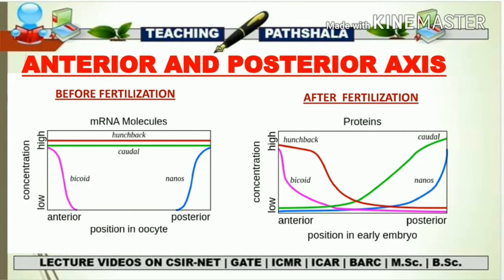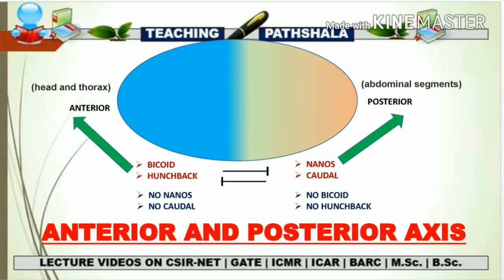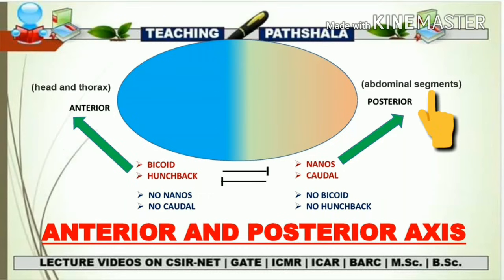Now let's consider this circle as a Drosophila embryo. You can see the anterior and posterior portions. The anterior portion gives rise to the head and thorax of Drosophila, and the posterior portion gives rise to the abdominal segment. The anterior portion contains the expression of bicoid and hunchback protein, and the posterior portion has the presence of nanos and caudal protein.